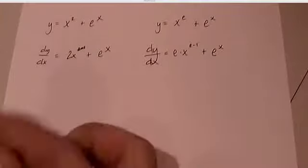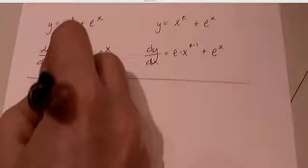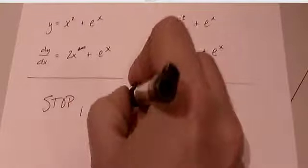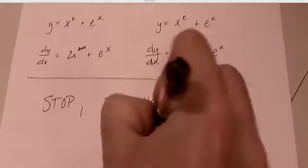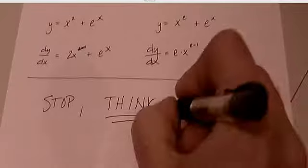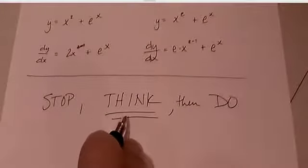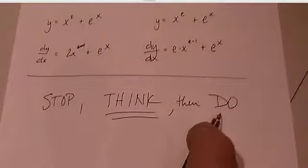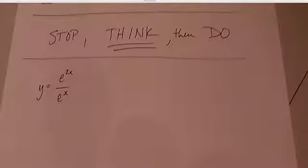Now, there are times in which you will find, and here's the thing, let's go ahead and talk about this. Stop, think, then do. That was the motto for last year. So if you're given something like this, y is equal to e to the 2x over e to the x, before you start panicking and start thinking to yourself, oh my gosh, that requires a quotient rule and all sorts of fun stuff like that, please do recognize that that simplifies.